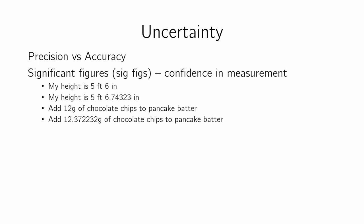I could tell you that my height is 5'6", or I could tell you it's 5'6.74323. These decimal points, meaning I know for a fact that that is my height, all the way to this number. This 3 at the end, I know that to be true. If it was 2, it would be wrong. If I told you in a recipe to add 12 grams of chocolate chips, or 12.372232 grams of chocolate chips, this means you have a very specific mass that you have to add. If you add this, this is probably wishy-washy. We don't know exactly.